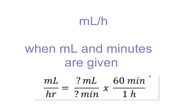Now we're going to work on milliliters an hour when they give you minutes — like 15 minutes or 20 minutes. If you're given milliliters over a certain number of minutes, you have to multiply by 60 minutes over an hour because you want to find out how many milliliters per hour.